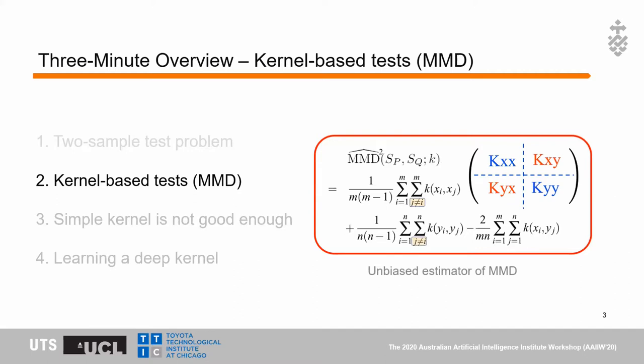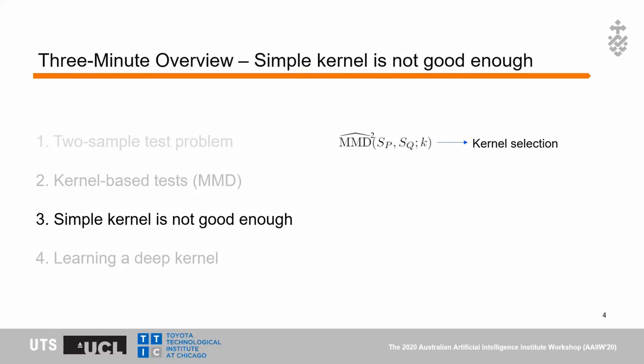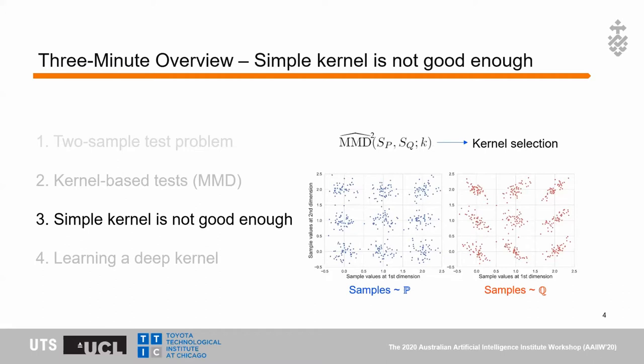From this equation, we can see that MMD actually depends on the kernel selection. Different kernels may give different performance for MMD. In this work, we found that simple kernels like the Gaussian kernel or Laplacian kernel — translation-invariant kernels — cannot give good performance when facing complex data like images. Here we take the blob dataset as an example, where each mode in Q has different variance compared to each mode in P.